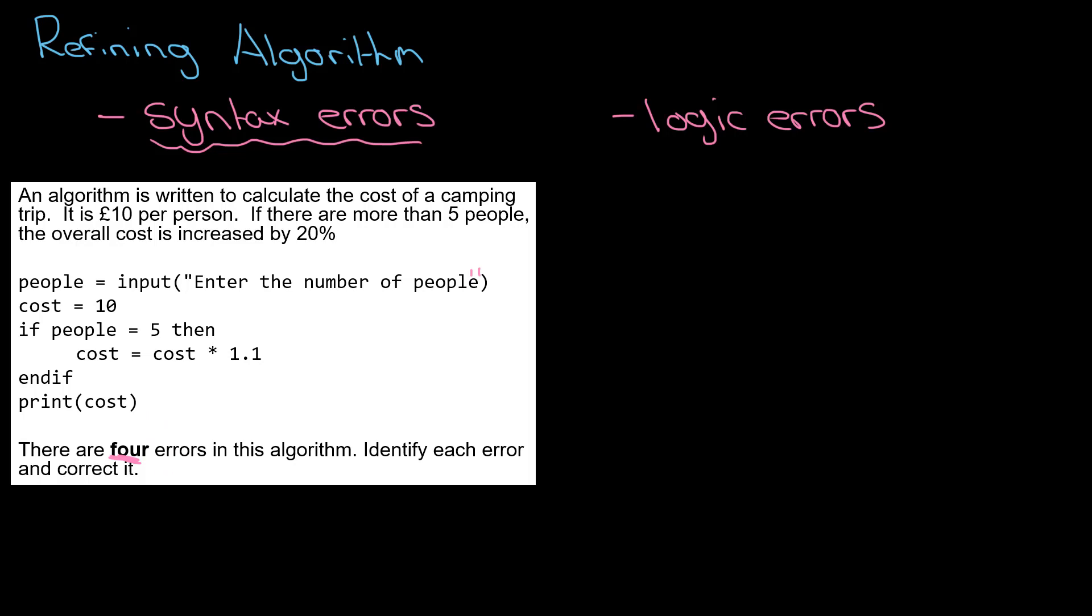That's the syntax errors done. Let's start working through the algorithm and figure out what the logic errors are. To do this, I need to test the algorithm with suitable test data. It's ten pounds per person, and if there are more than five people the overall cost is increased by 20 percent. That suggests I'm going to need to do two tests: one where there's more than five people and one where there's less than five people. I'm going to do the less than five people first, so I'm going to do people equals three.